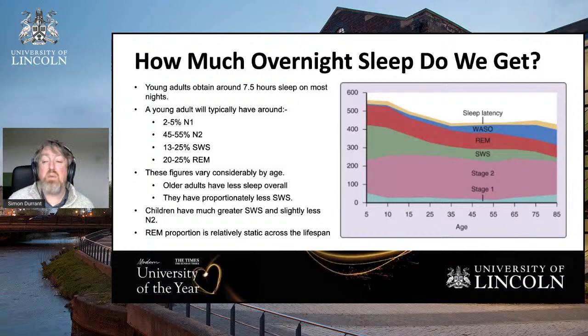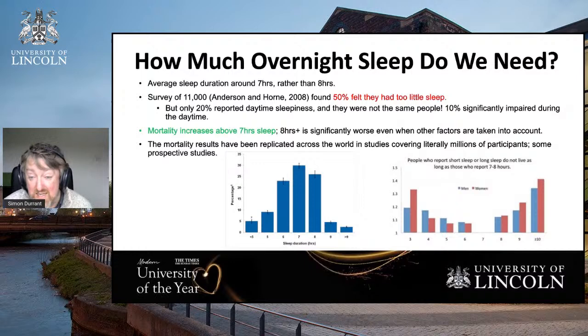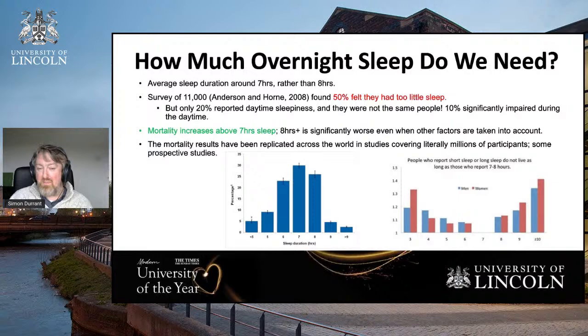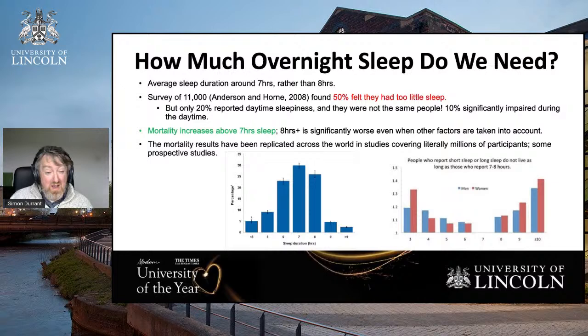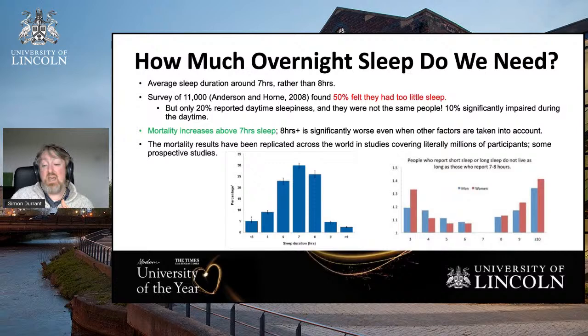So that's how much sleep we get — how much sleep do we need? One of the most prevalent urban myths in society is that you need to get eight hours sleep a night. It varies by age, but in fact the average sleep duration people are obtaining is seven hours. In a survey of about 11,000 people in the UK, the average was around seven hours — quite a lot of people getting six hours, quite a lot getting eight hours. Fifty percent of people said they felt they had too little sleep.